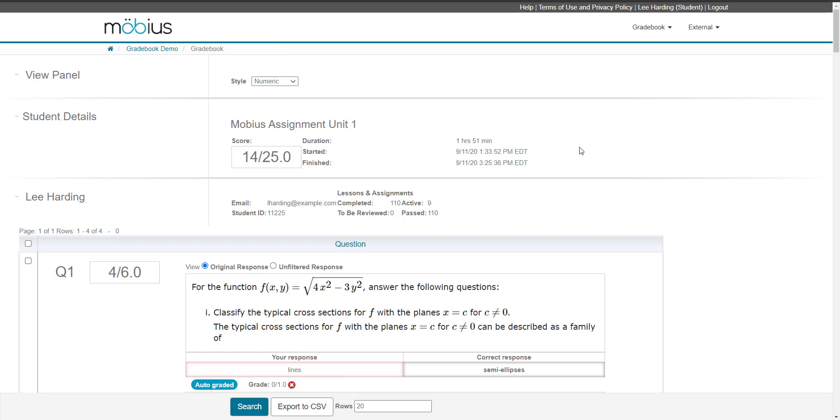Next is the student details pane that provides information about the activity name, the achieved score, the duration of your attempt, the timestamp of when your attempt was launched, and the timestamp of when your attempt was submitted.